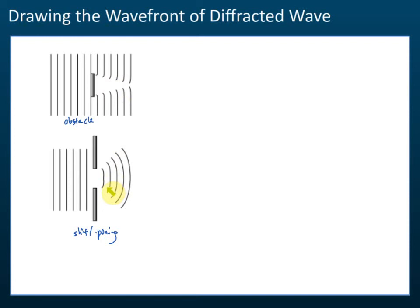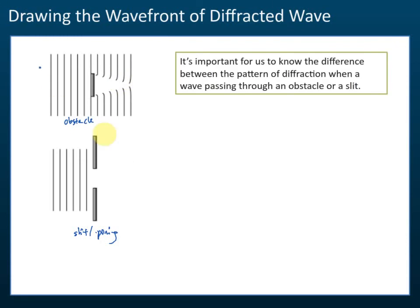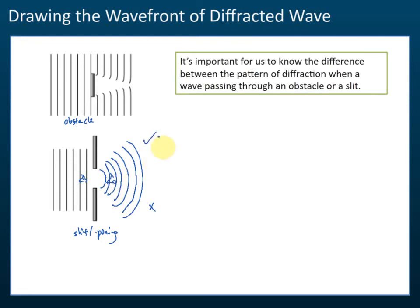This may come out in objective questions as well. When you sketch the wavefront diagram, make sure that you draw the spread. We have a small curve here for obstacles. Make sure that the wavelength is still the same after the diffraction. A lot of students make mistakes — they draw something where this wavelength is very big and this wavelength is very small. The wavelengths shouldn't be different after diffraction. It should be more or less the same. The wavelength here is more or less the same as the wavelength here.